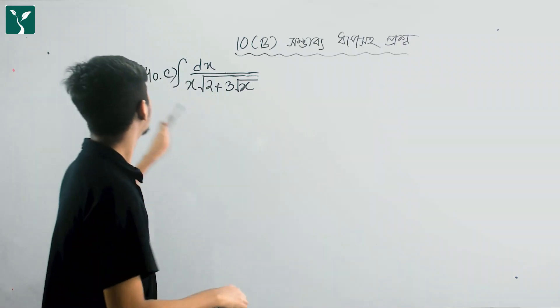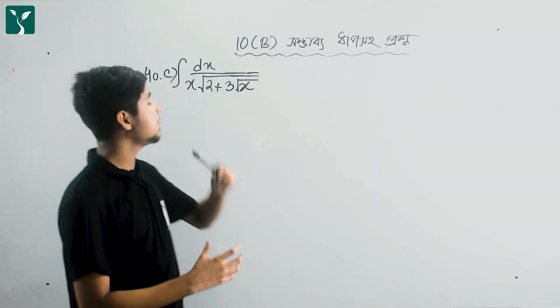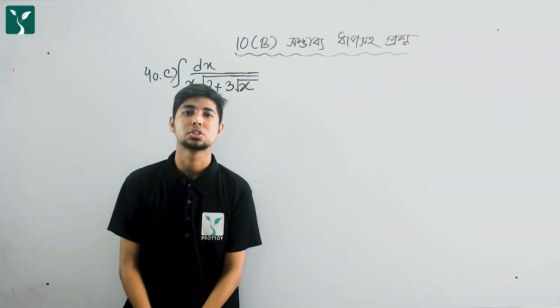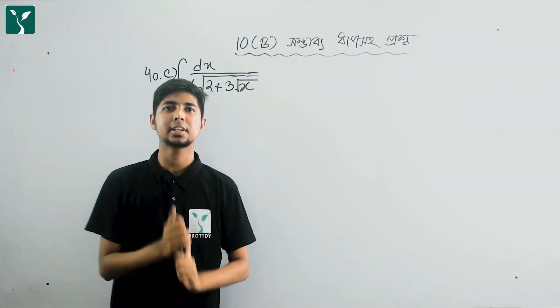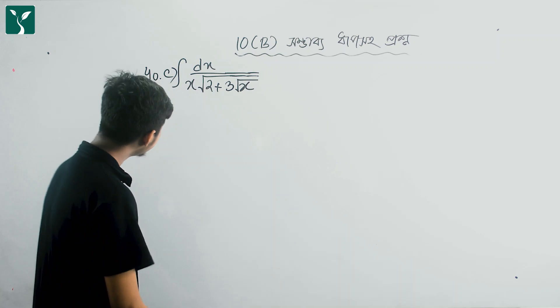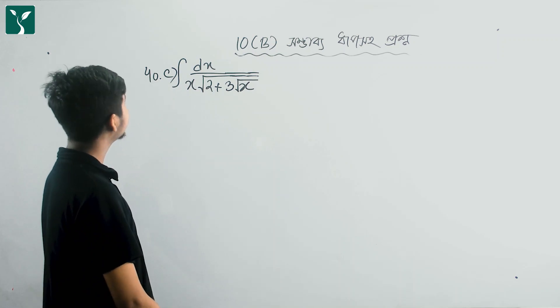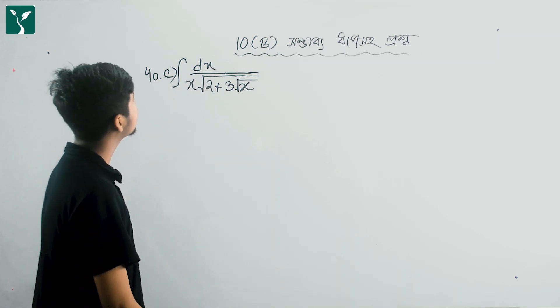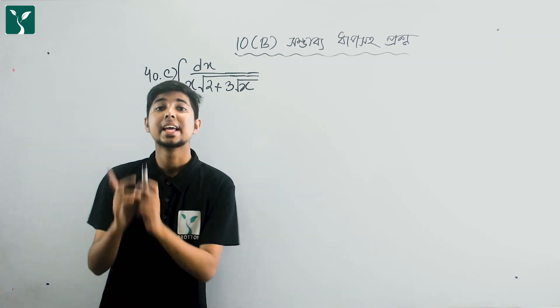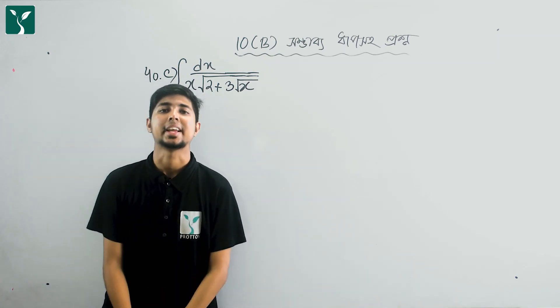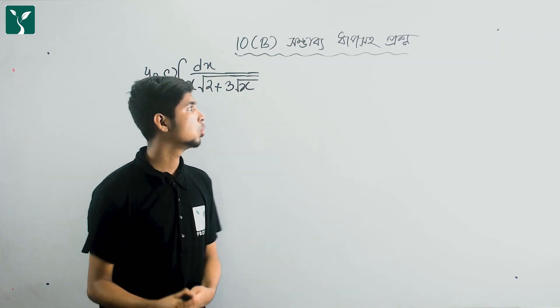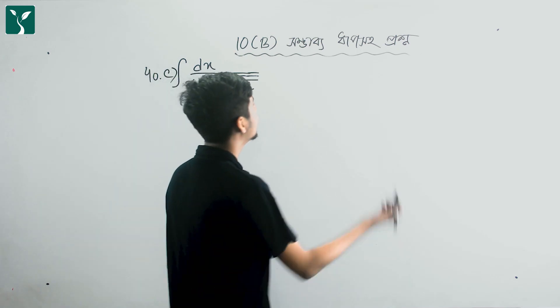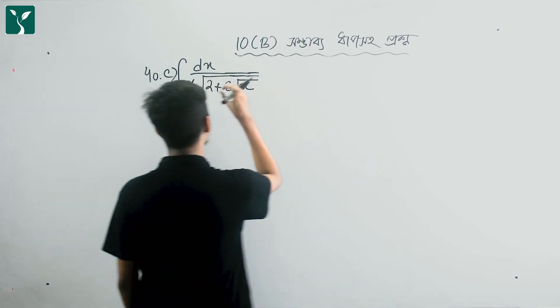If you look at this number, 40c is a problem test solution. The problem statement is: integration of dx by x root over 2 plus 3 root over x. So let's take a look at this one.